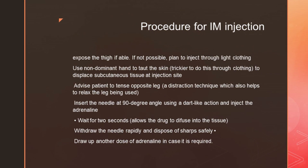For the IM injection technique in anaphylaxis: expose the thigh (vastus lateralis) or inject through clothing if not possible. Use the non-dominant hand to taut the skin, which displaces subcutaneous fat so the solution reaches the muscle. Advise the patient to tense the opposite leg so the injection leg relaxes. Insert the needle at a 90-degree angle, wait two seconds before removing the needle so the drug diffuses into the tissue, then withdraw the needle rapidly and dispose safely. Draw up another dose — if there is no response within five minutes, administer a second dose.